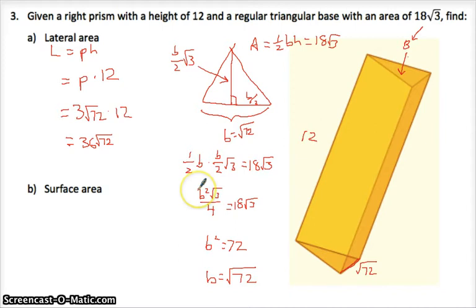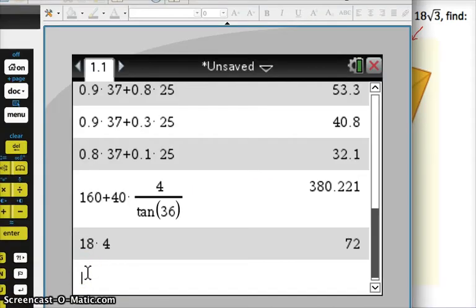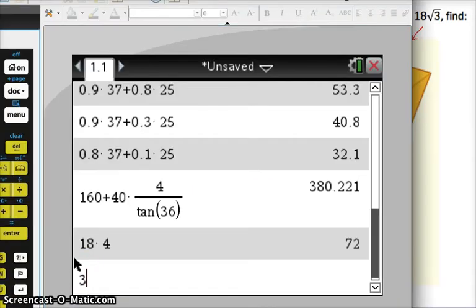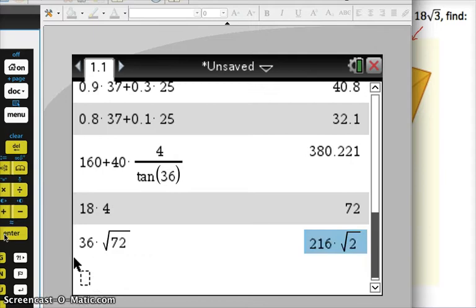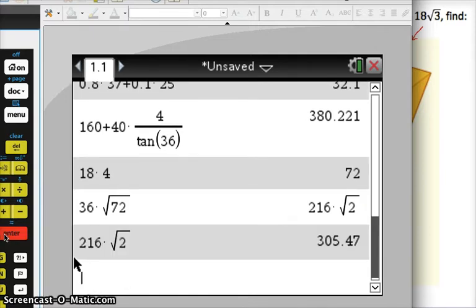That's it, actually. Yeah. And you can do it like that, or you can get a decimal. That's not reduced. Yeah, 216 square root of 2, or 305.47.